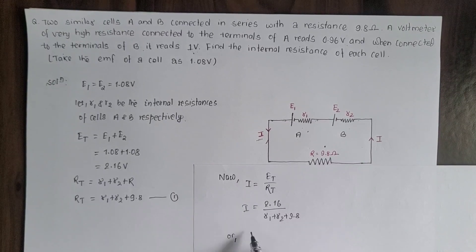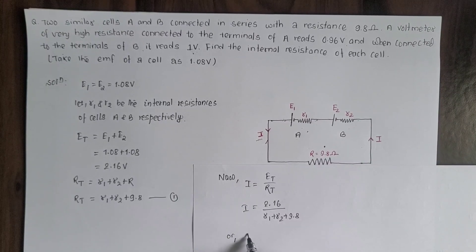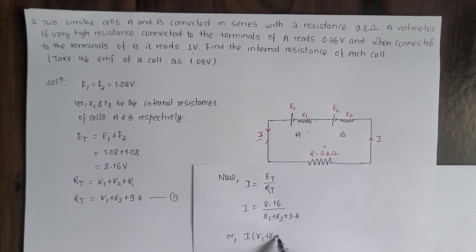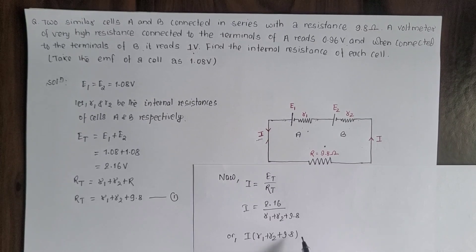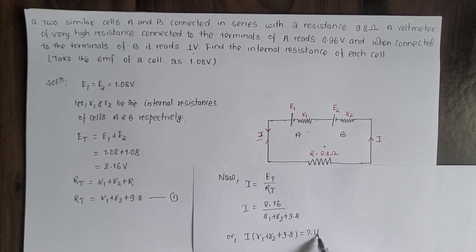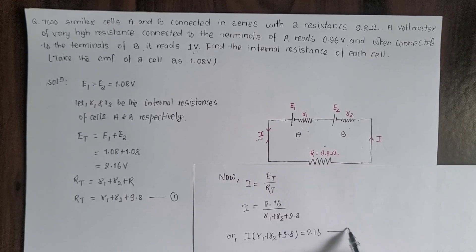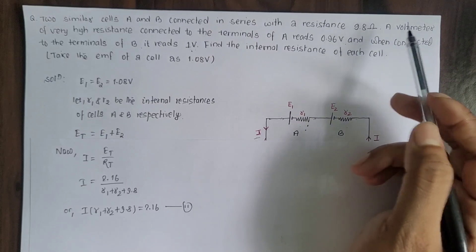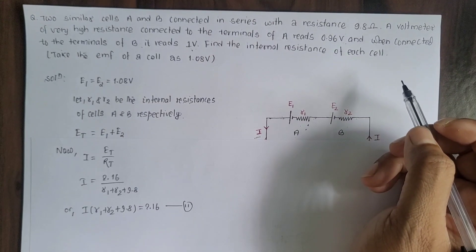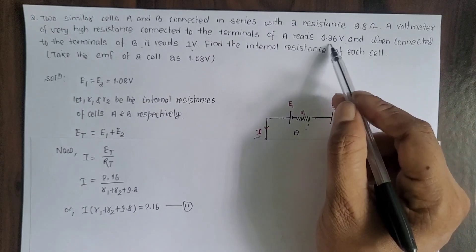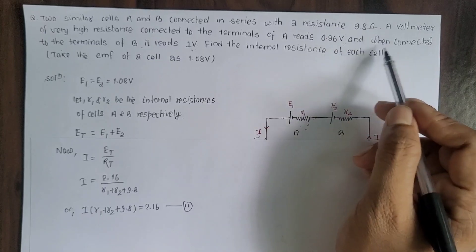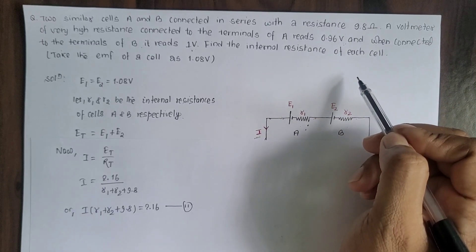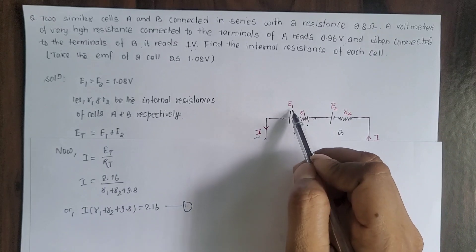Cross-multiplying, I times (R1 plus R2 plus 9.8) equals 2.16 — this is equation number 2. Now from the question: a voltmeter of very high resistance connected to the terminals of A reads 0.96 volt, and when connected to the terminals of B it reads 1 volt.